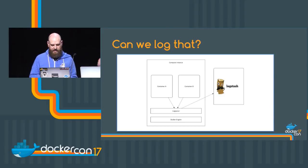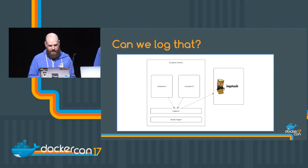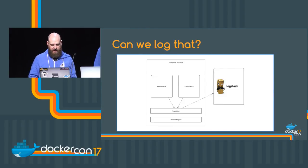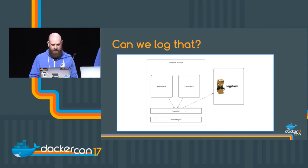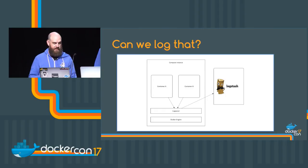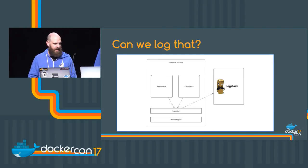Here's the base architecture: Container A or B - anything that's running - feeds into Logspout, which listens to the socket Docker runs on to collect logs. Logspout then ships the logs to wherever you like - I put Logstash there, but you could have a Redis instance in front, it could be Splunk, AWS logs, or Azure logs. There are plug-ins for pretty much every logging interface in Logspout.